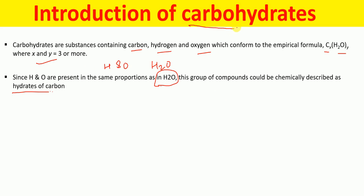If you look at the word carbohydrate, it consists of 'carbo' and 'hydrates,' that means hydrates of carbon. Why are carbohydrates also called hydrates of carbon? Because in carbohydrates, hydrogen and oxygen atoms are present in the same proportion as in water. Therefore this group of compounds could also be empirically described as hydrates of carbon.